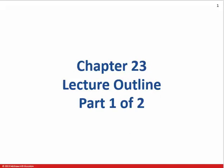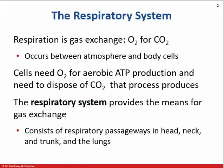This is a video on chapter 23, the respiratory system. The respiratory system is about getting oxygen into us and getting carbon dioxide out of us. We need oxygen for aerobic respiration, for making ATP, and the waste product of that is carbon dioxide, which has to be gotten rid of. The respiratory system provides the means for that exchange.